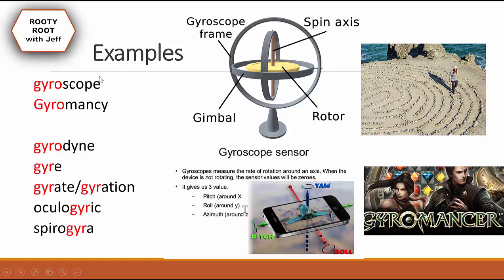Some example words are Gyroscope, Gyromancy, and Gyrodyne. The first word, Gyroscope, is a device — we have a picture of it — and it measures the rate of rotation around an axis. So if you ever played those mobile games that had you twist your phone to control a car or something, gyroscopes made that possible.